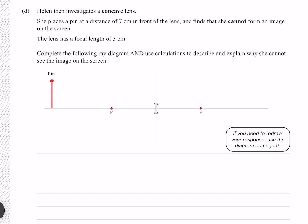Helen then investigates a concave lens. She places a pin at a distance of 7 centimeters in front of the lens and finds that she cannot form an image on the screen. The lens has a focal length of 3 centimeters. Complete the following ray diagram and use calculations to describe and explain why she cannot see the image on the screen.